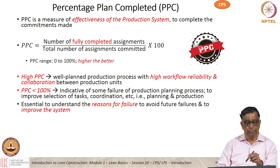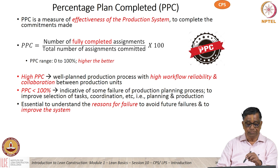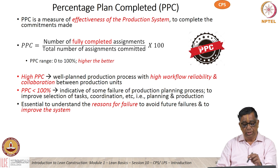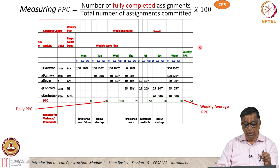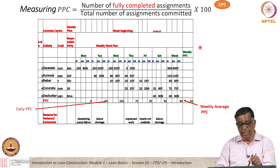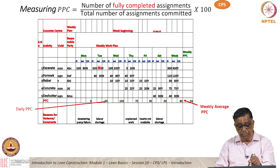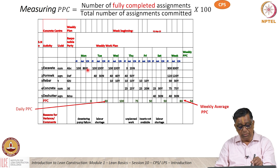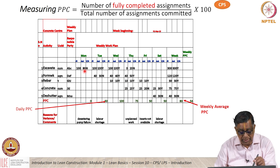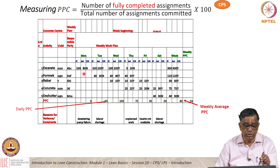I talked to you about this parameter called PPC — the Plan Percent Complete. It's a measure of the effectiveness of the production system. In mathematical terms, it's the number of fully completed assignments divided by the total number of assignments committed, multiplied by 100. For example, if you look at a weekly planning from Monday to Saturday, there are various activities. The first column for every day shows how much was planned; the second column shows how much was actually done.